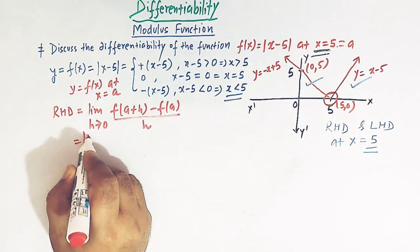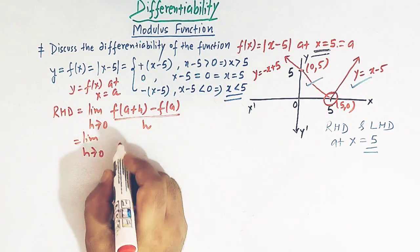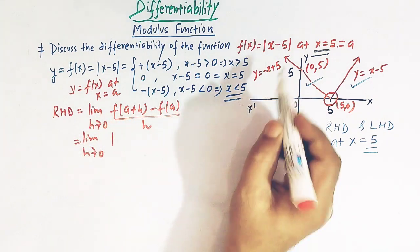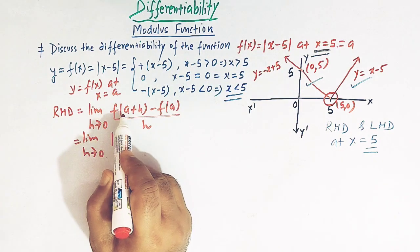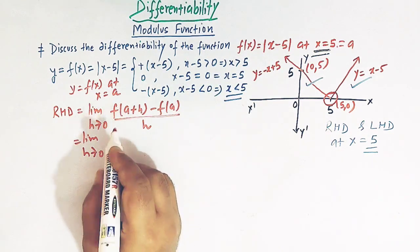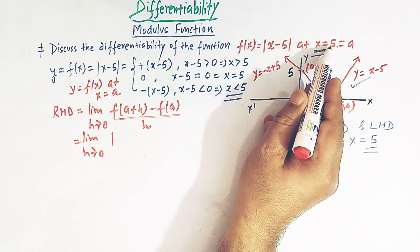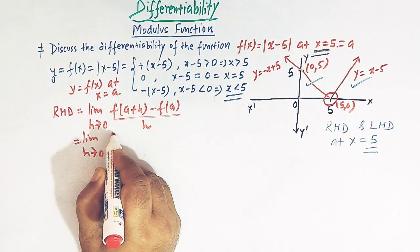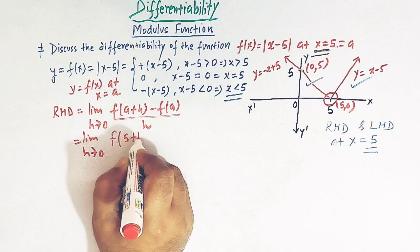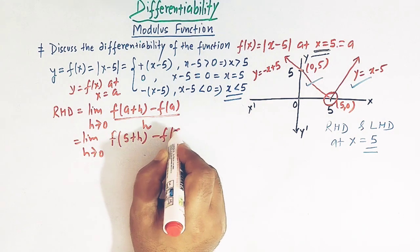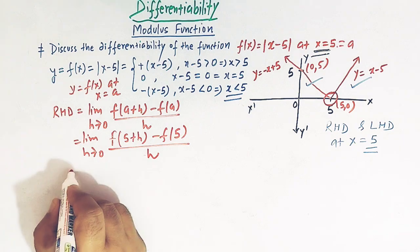The right hand derivative of y = f(x) at x = a is defined as: limit as h→0 of [f(a+h) - f(a)] / h. With a = 5, this becomes limit as h→0 of [f(5+h) - f(5)] / h.